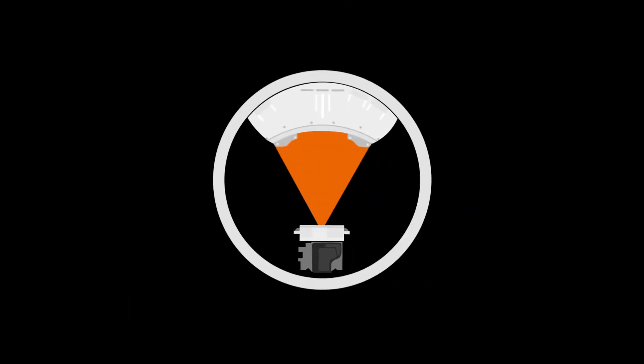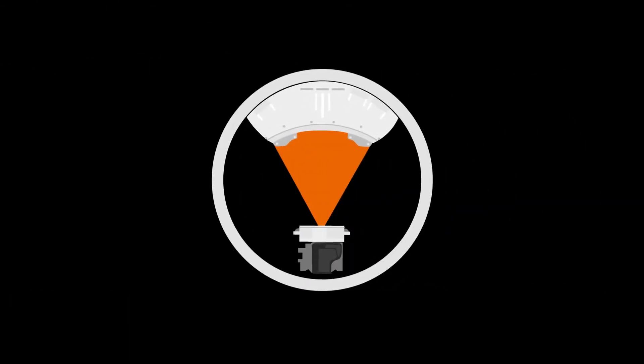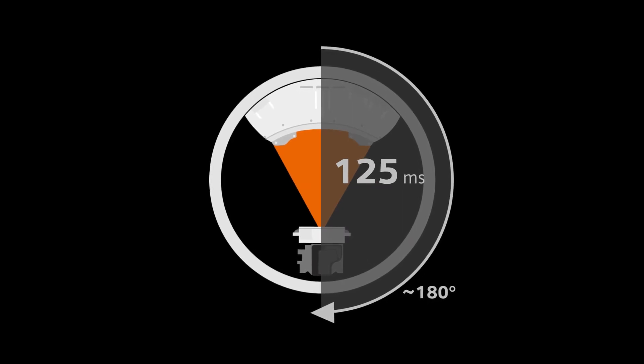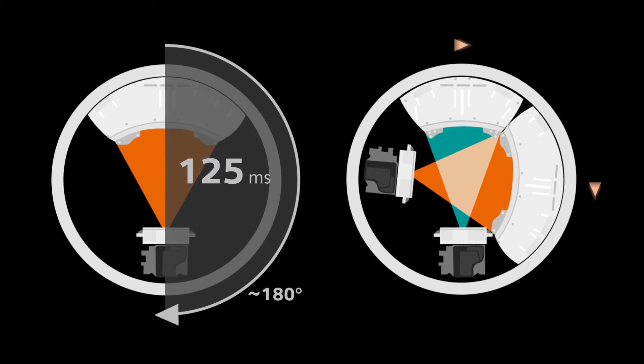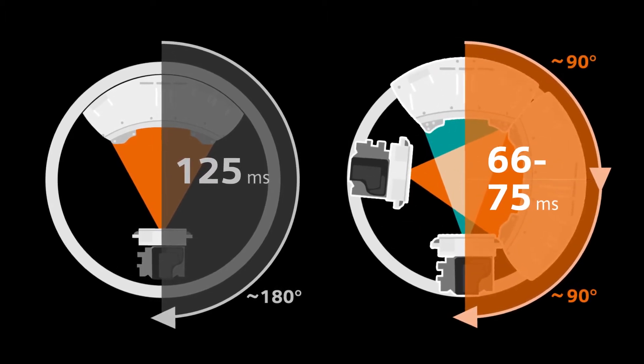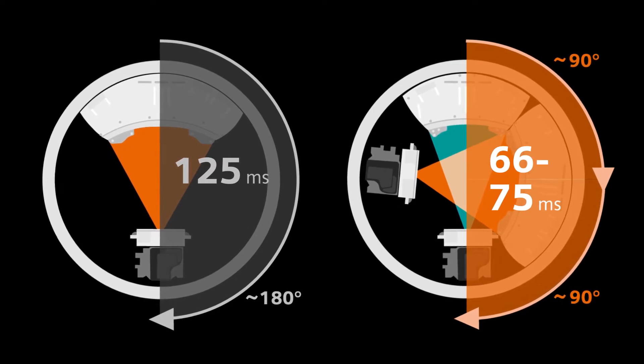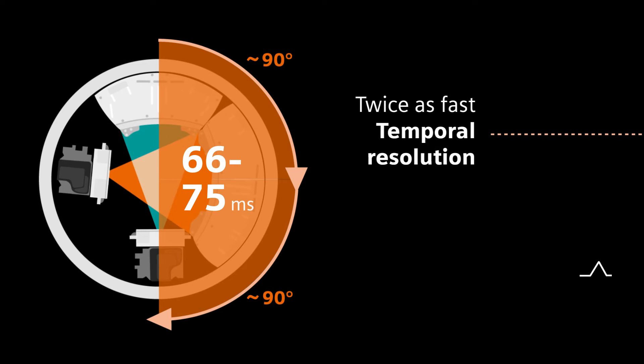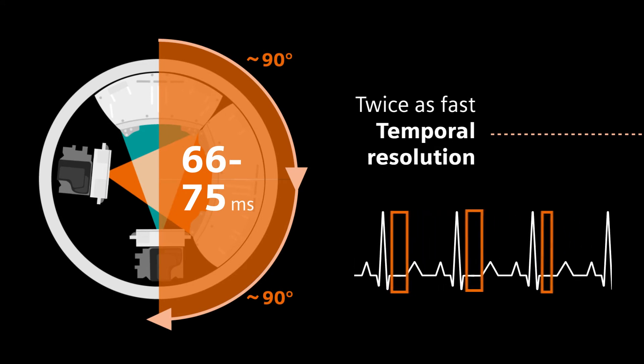While a conventional single-source CT scanner needs to rotate at least 180 degrees to acquire an image, a dual-source CT scanner needs to travel just 90 degrees because it uses two X-ray sources and two detectors simultaneously. As a result, dual-source CT offers faster temporal resolution compared to conventional single-source CT. In fact, it is twice as fast.